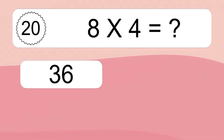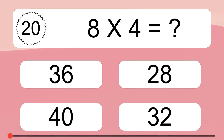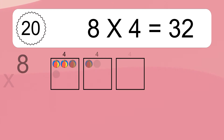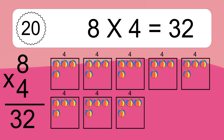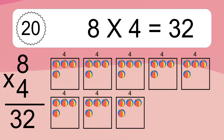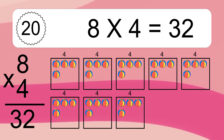Eight times four equals what? Eight times four equals thirty-two. We have eight boxes and each box has four colorful balls inside. If you count all the balls in all the boxes together, you will have eight times four balls. This equals thirty-two balls.